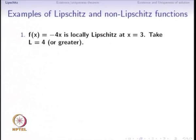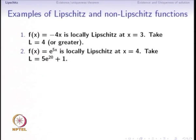For f(x) = -4x, it is locally Lipschitz at x = 3 — take the Lipschitz constant L = 4 or anything larger. For f(x) = e^(5x), it is locally Lipschitz at x = 4; we can take L = 5e^20 + 1. Notice we take the slope of the function evaluated at x = 4 and something slightly greater. How much greater we take decides how large the open ball around x = 4 is, but since we only need a ball of radius greater than 0, we can take L slightly more than the slope at x = 4.